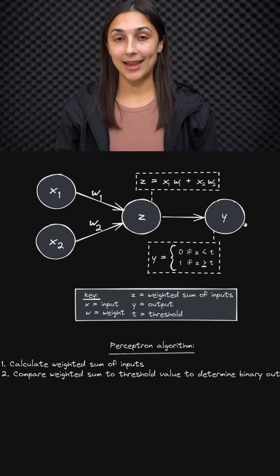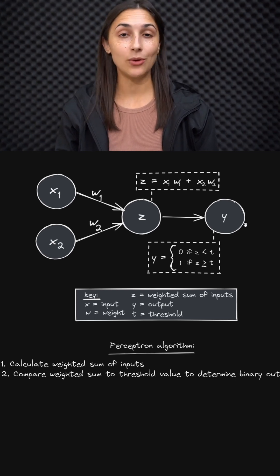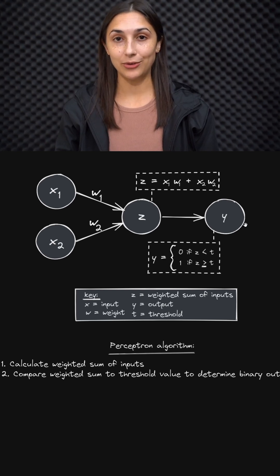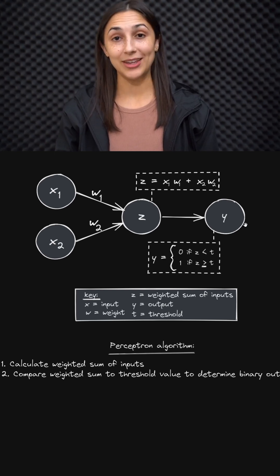So now we can take this simple idea of a single layer perceptron and build on top of it to understand artificial neural networks in general.